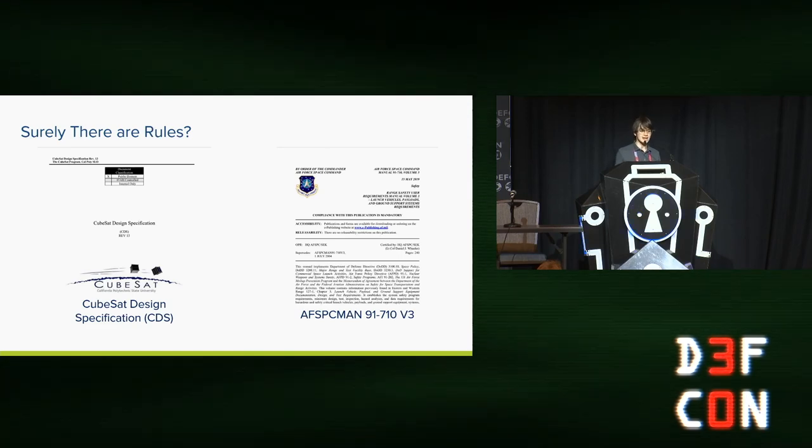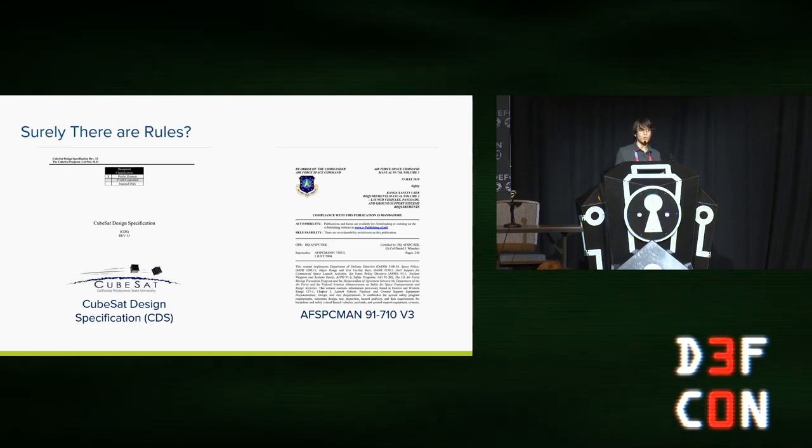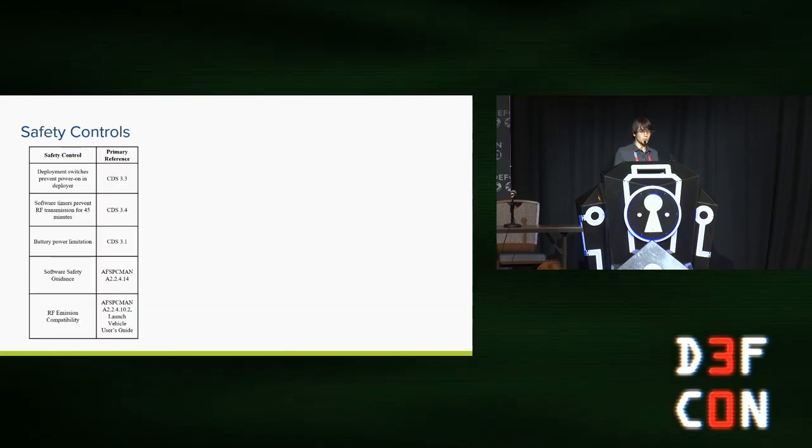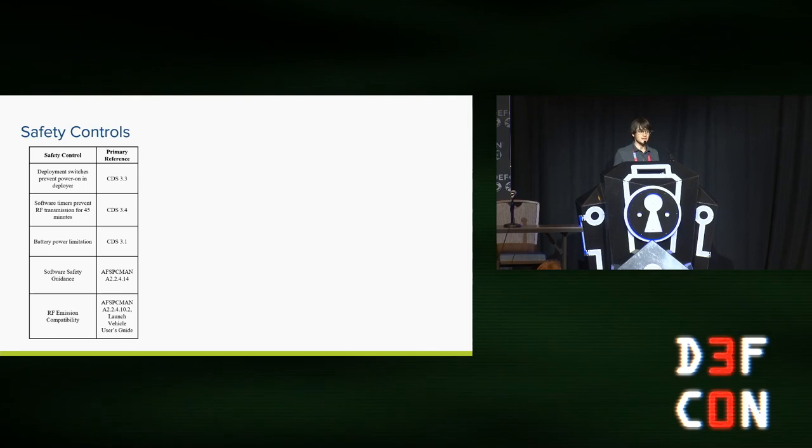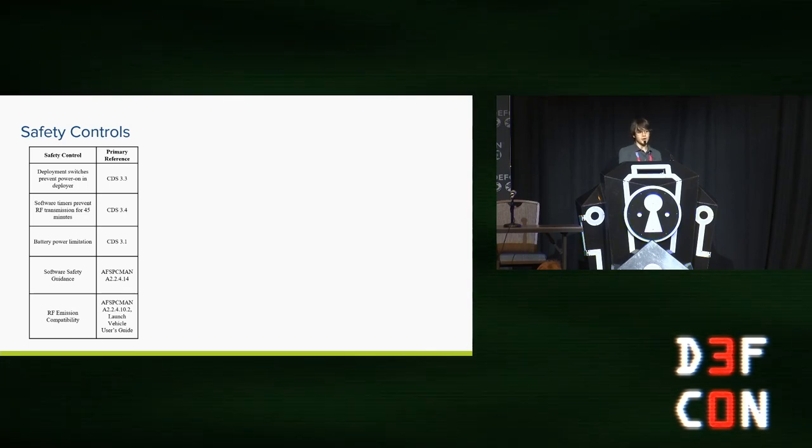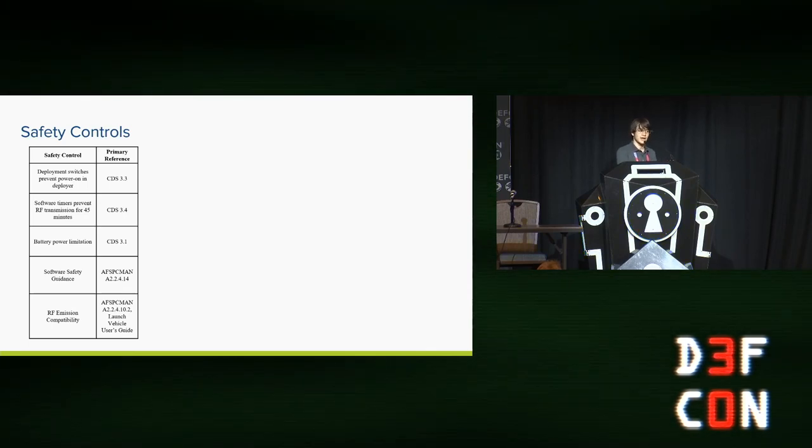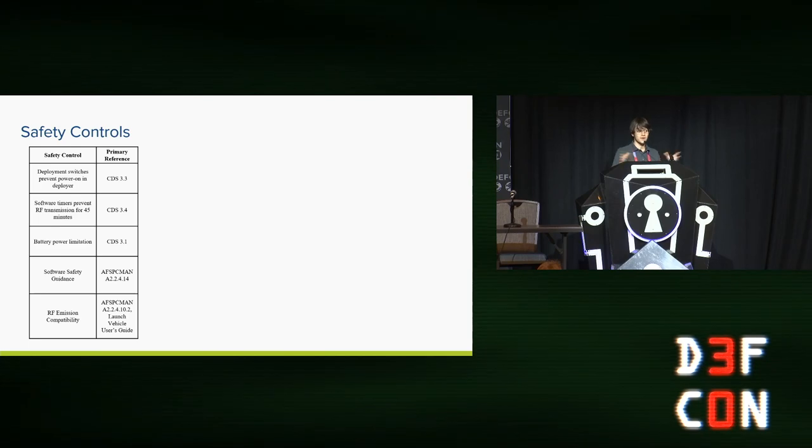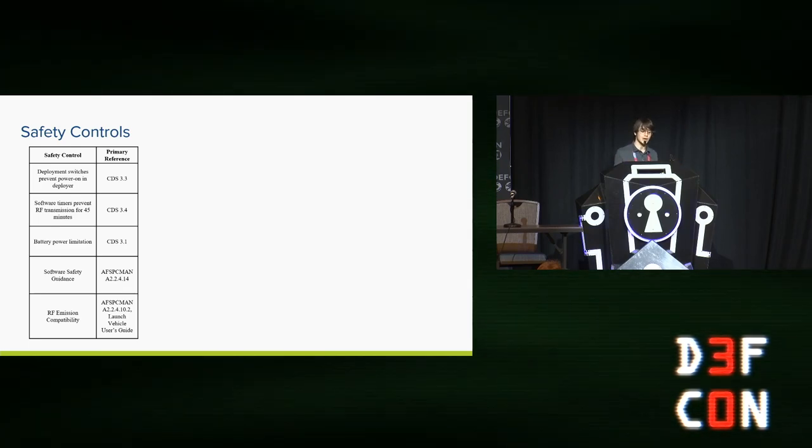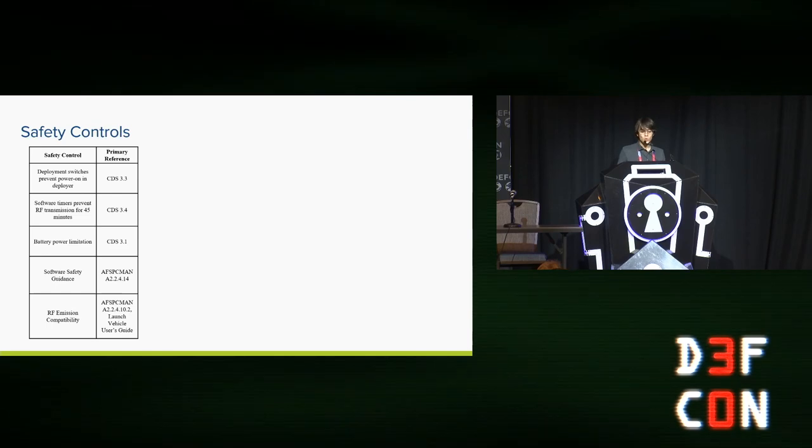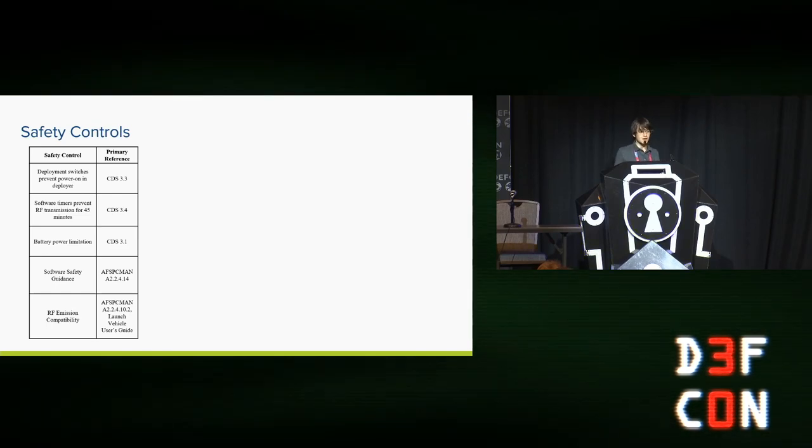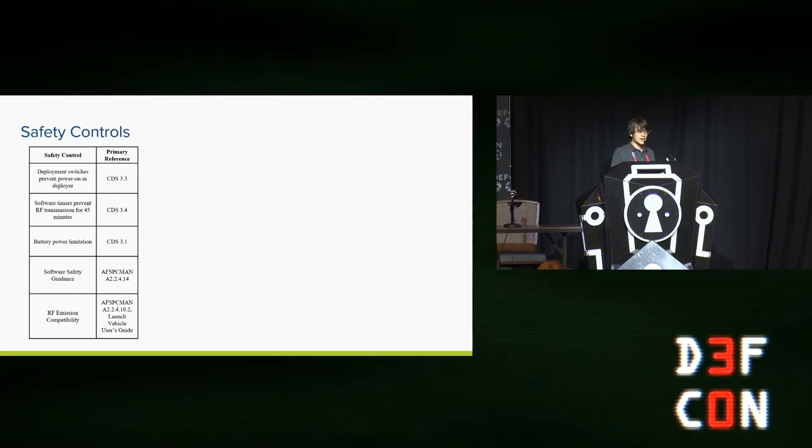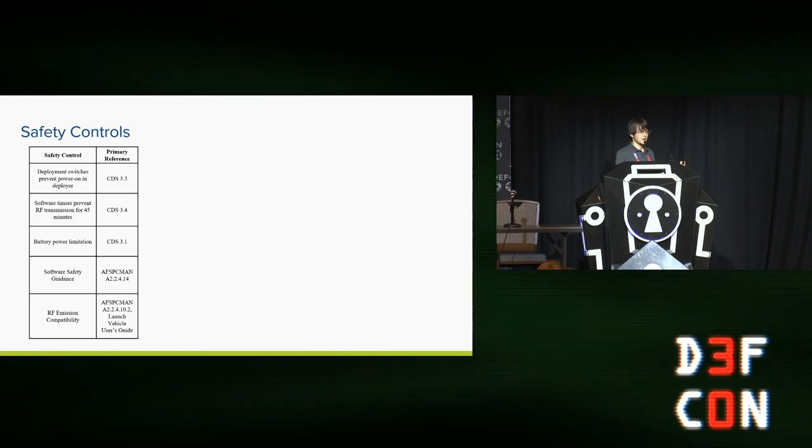And if we dig into these documents, the situation looks quite grim for our attacker, our radio jammer. There are all kinds of very sensible rules that get in the way of radio jamming. Stuff like CubeSats aren't allowed to turn on while they're attached to the launch vehicle. They have to have these little switches that are pressed down and keep them turned off. Or when you separate from the launch vehicle, you have to wait 45 minutes in low-Earth orbit before you can start transmitting radio signals. But what's interesting about these rules, if we delve into them, is that the way they're enforced is often just a matter of paperwork.